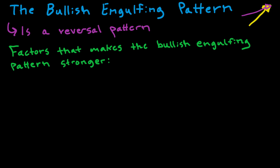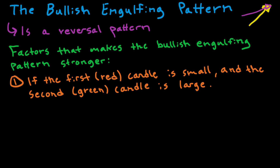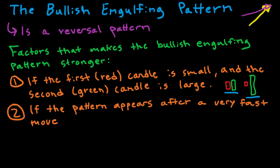Factors that make the bullish engulfing pattern stronger: the first factor is if the first red candle is small and the second green candle is large. The smaller the red candle and the larger the green candle, the better. For example, a red candle with a green candle that just barely engulfs it is not as strong as a red candle followed by a large, strong green candle — that is more bullish.